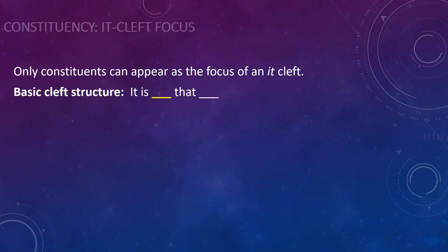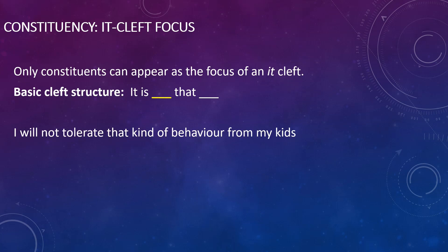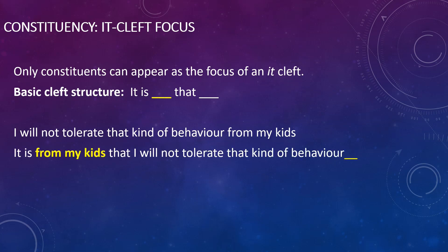Constituency tests using it-clefts. In English, we have a construction known as the cleft: 'It is the printer that is broken,' 'It is the paper that is dirty,' 'It is my sister who came to the party.' The basic cleft structure has 'it is something' followed by an embedded clause introduced by 'that,' 'who,' or another complementizer. So taking the sentence 'I will not tolerate that kind of behavior from my kids,' we could rephrase it as 'It is from my kids that I will not tolerate that kind of behavior,' showing that 'from my kids' must be a constituent — a prepositional phrase.